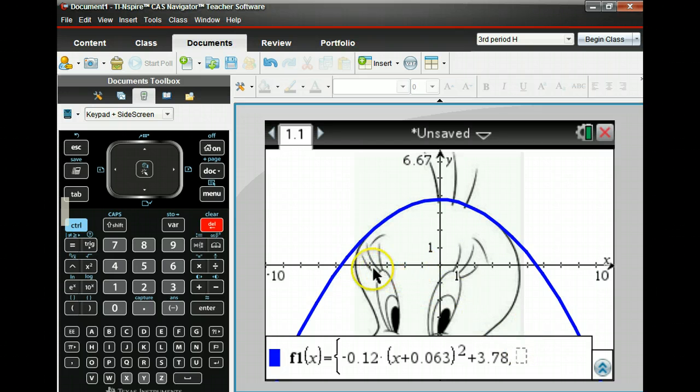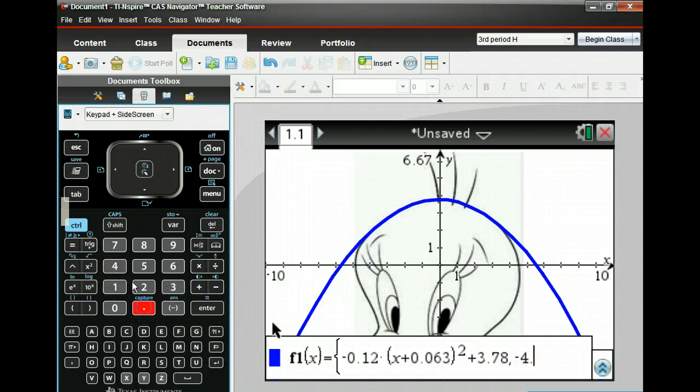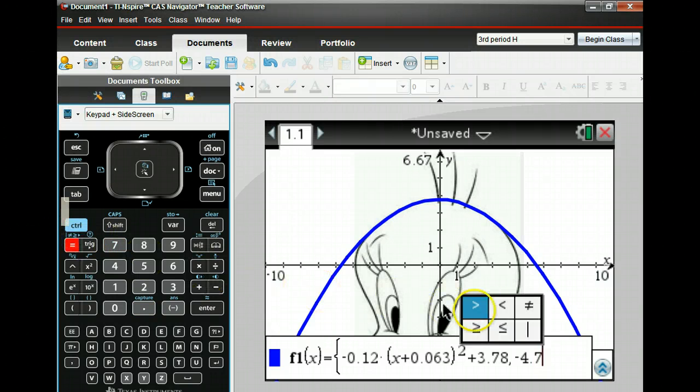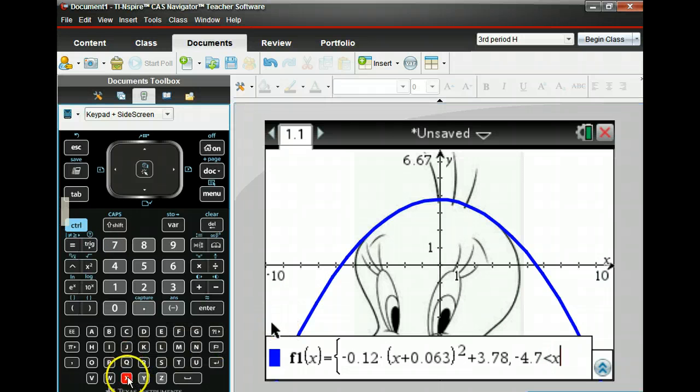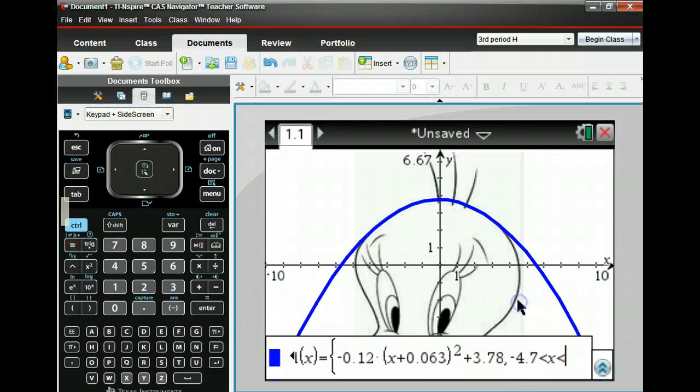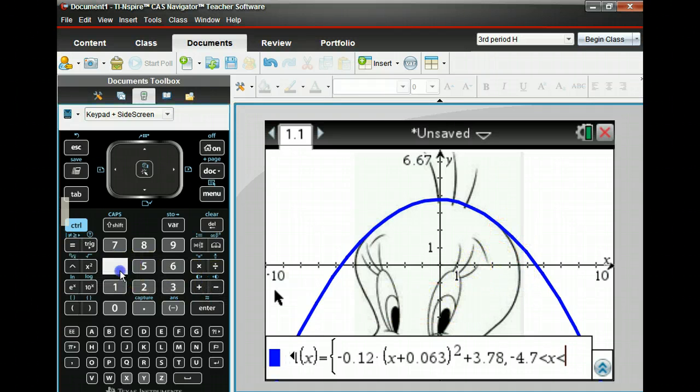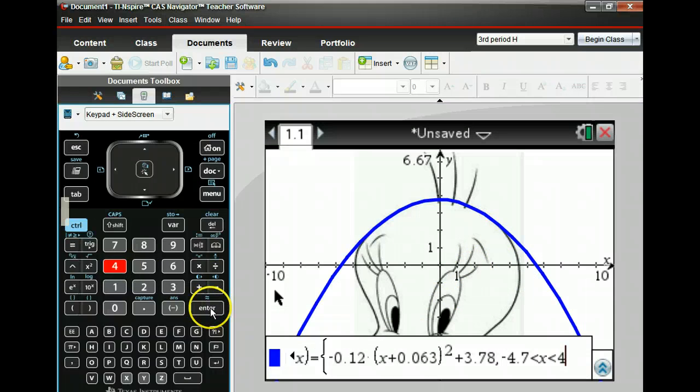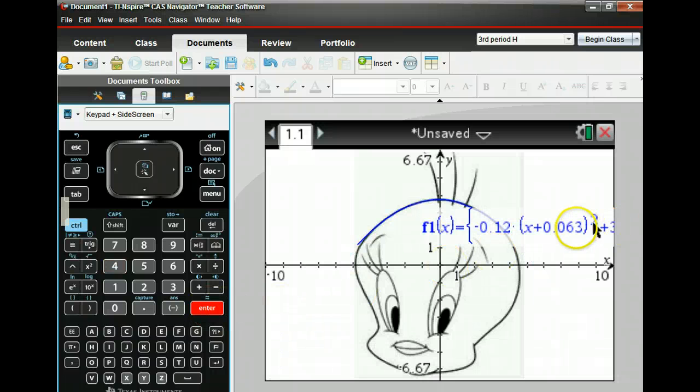So negative 4.7 less than x, less than, control equals on the right. It looks like one, two, three, four, maybe about four here for the x values, maybe a little less. Let's just try four to start with and press enter. You can see the restriction there.